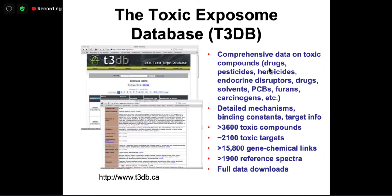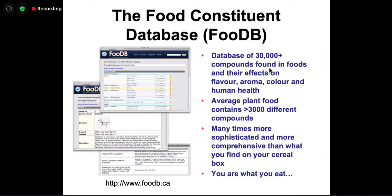The Toxic Exposome Database is a smaller database focused on toxic compounds — drugs, pesticides, herbicides, endocrine disruptors, solvents, carcinogens — modeled like DrugBank with information about toxic targets, genes, and chemicals, along with reference spectra. FoodDB now has more than 70,000 compounds and is our third most popular database behind DrugBank and HMDB. You can find literally thousands of compounds for anything from an apple to an orange to your cereal, and it's taken us in new directions looking at what's actually in your food.